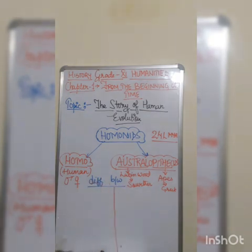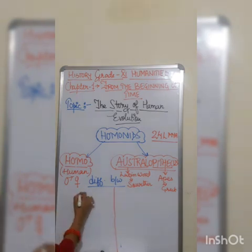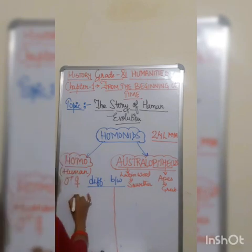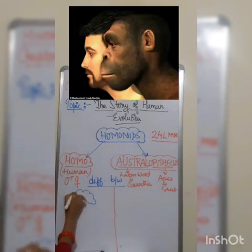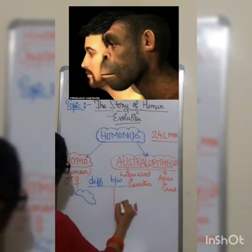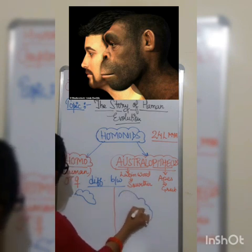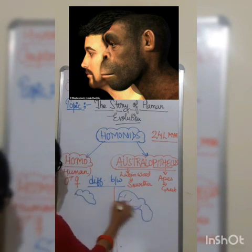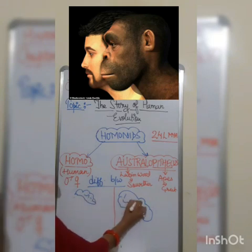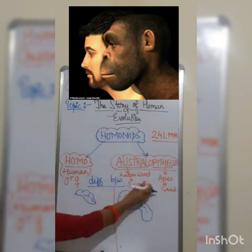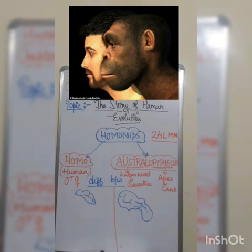Let us differentiate homo with australopithecus. Homo has a small brain, whereas australopithecus has a large brain. In this way, we can differentiate that australopithecus might have features more like primates, which we covered in the previous chapter.